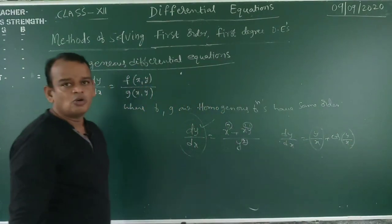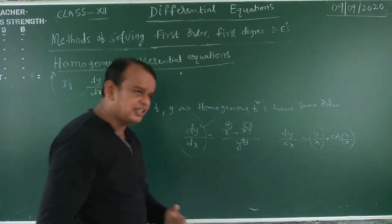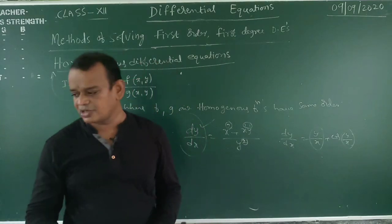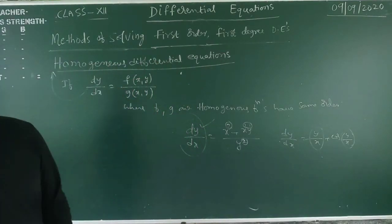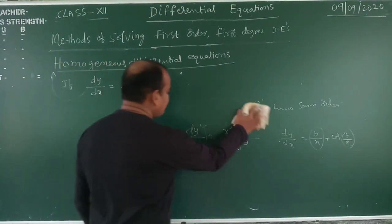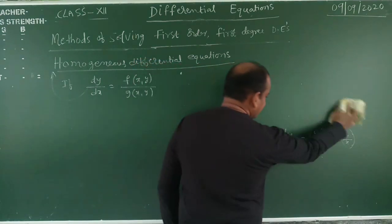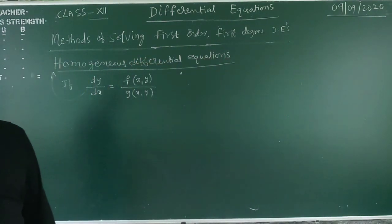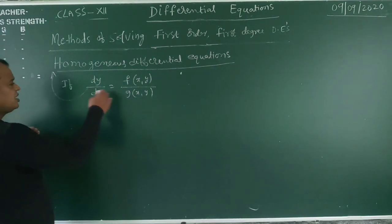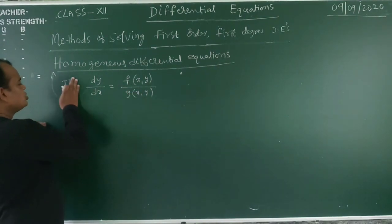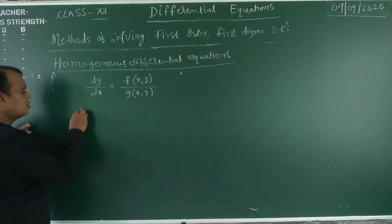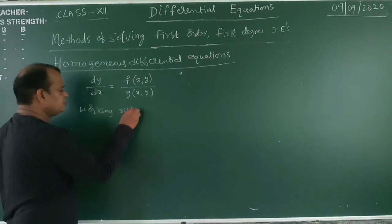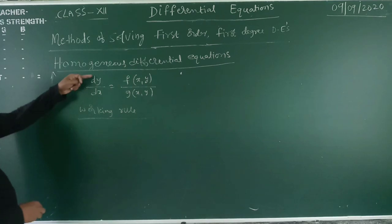Now, how to solve the homogeneous differential equation? First, identify that it is homogeneous. After that, apply the working rule. Suppose dy/dx = f(x, y) / g(x, y) — here dy/dx, y is the dependent variable and x is the independent variable.